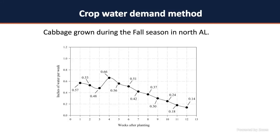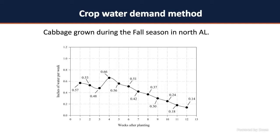On the other hand, cabbage is typically grown during fall. The curve shows a reduction in water uptake — not because cabbage requires less water than watermelon, but because in the fall you go from warmer to cooler temperatures. So the reduction in water requirement is not due to crop coefficients, but because the soil is losing less water to evaporation. Your system requires more water during spring than during fall.